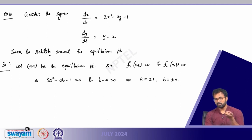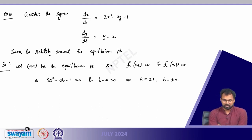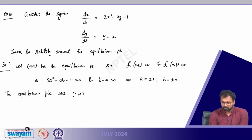Substituting b = a gives 2a² − a² − 1 = 0, so a = ±1 and b = ±1. Checking: a = 1, b = 1 and a = −1, b = −1 make both f1 and f2 equal to zero. The pairs (1, −1) and (−1, 1) do not work. Therefore the equilibrium points are (1, 1) and (−1, −1).